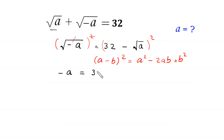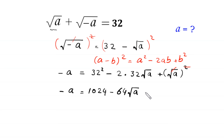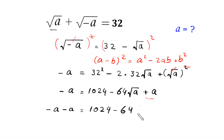This becomes 32² - 2·32·√a + (√a)², which simplifies to -a = 1024 - 64√a + a. Now we move the +a to the left-hand side, giving -a - a = 1024 - 64√a.